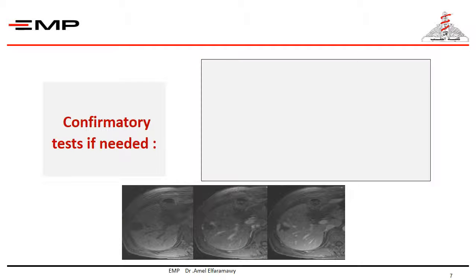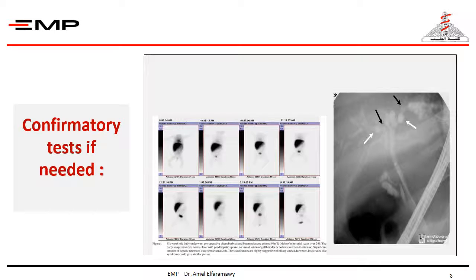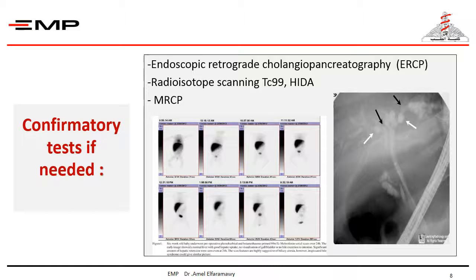According to the results of the screening tests, you can confirm the diagnosis by doing more sophisticated investigations — like doing PCR in case of viral hepatitis, enzyme assay for a metabolic disease, abdominal CT to evaluate masses, MRI to differentiate hemangioma from solid tumor. To confirm patency of the biliary system, you can do ERCP, but it is difficult in young age and can be replaced by HIDA scan or MRCP.